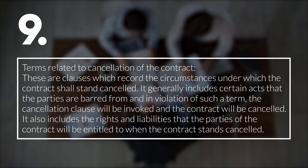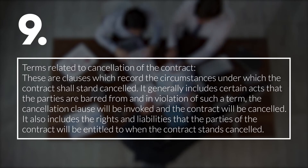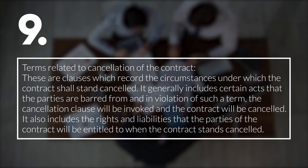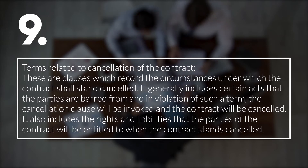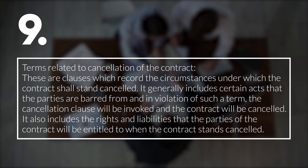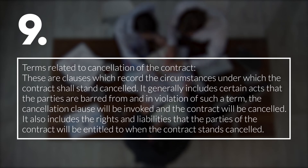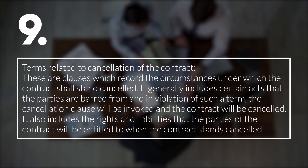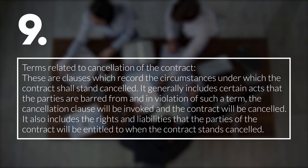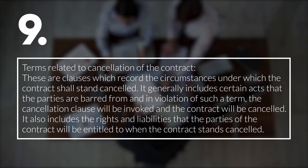9. Terms Related to Cancellation of the Contract. These are clauses which record the circumstances under which the contract shall stand cancelled. It generally includes certain acts that the parties are barred from, and in violation of such a term, the cancellation clause will be invoked and the contract will be cancelled. It also includes the rights and liabilities that the parties of the contract will be entitled to when the contract stands cancelled.